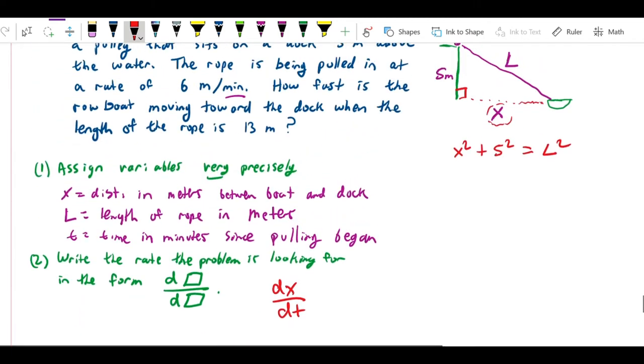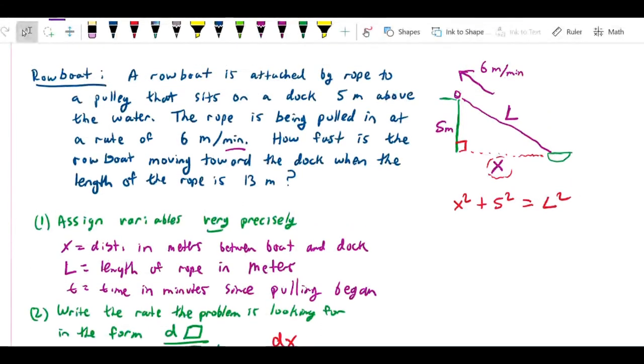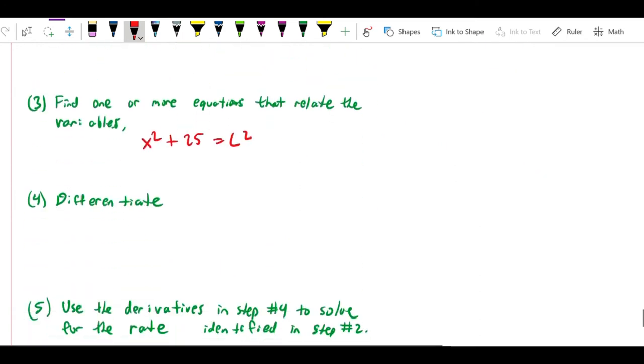And we can also tell from the problem that 6 meters per minute is the rate at which the rope is being pulled. So we can see that the rope, which is length L, is getting shorter at the rate of 6 meters per minute. That means that its rate of change is negative because the actual quantity L is going down. So that means that we would say that dL/dt is equal to negative 6.